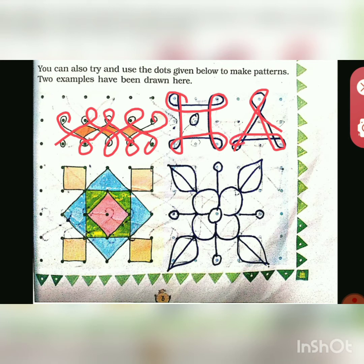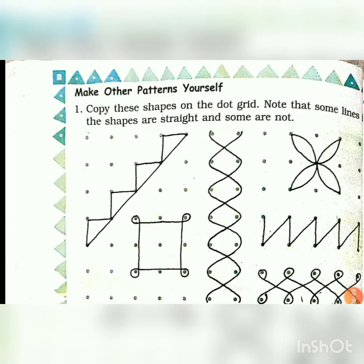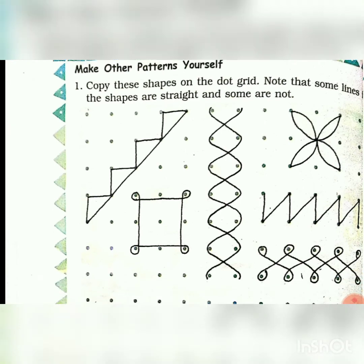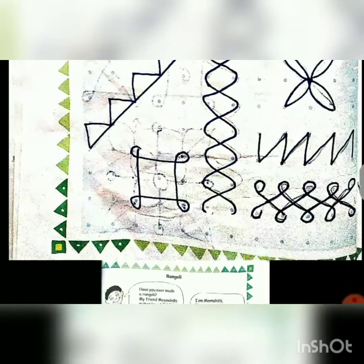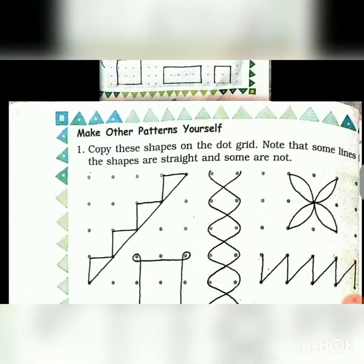You can make your own design. Make other patterns yourself. Copy these shapes onto the dot grid. Note that some lines in the shapes are straight and some are not. They have given some patterns with more straight lines and some with curves. They are asking us to draw the same pattern in the given space — I'll show you how, and you can draw the same picture.